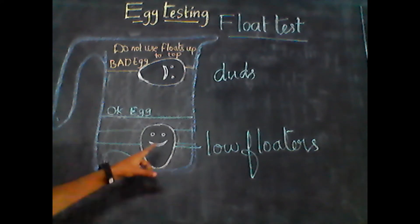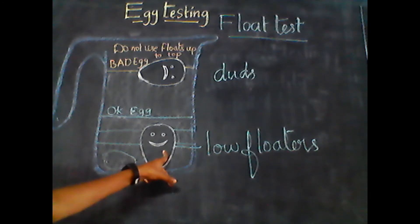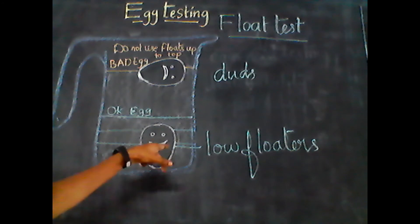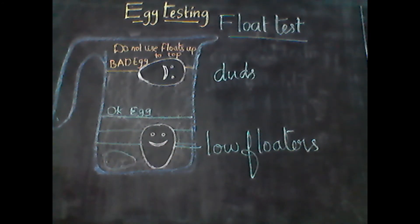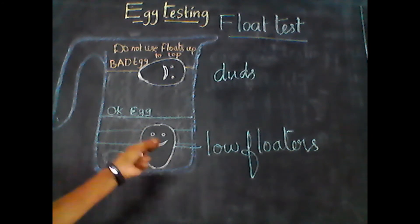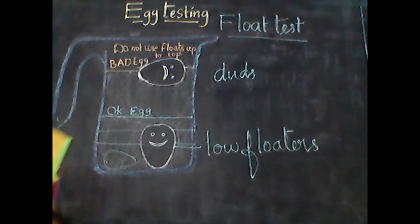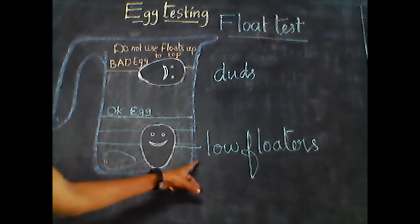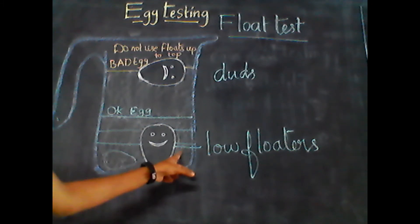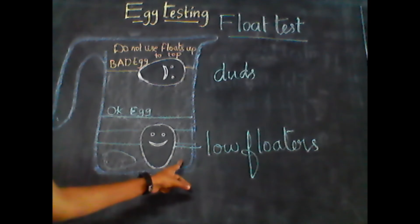Low floaters showing rock and roll movements in the water — these movements are due to movement of the developing embryo inside the egg. Such type of eggs are called good eggs and they are used for hatching purpose.